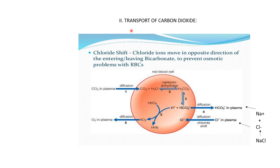Moving on to the second part of internal respiration — transport of carbon dioxide. Carbon dioxide in the plasma diffuses into the RBC, combines with water, and forms carbonic acid in the presence of carbonic anhydrase, which is present only in RBCs. This carbonic acid is unstable and dissociates into H⁺ ions and bicarbonate. The bicarbonate diffuses into the plasma. Since something negative is going outside the RBC, Cl⁻ ions move inside to maintain balance — this is called the chloride shift. The H⁺ ions combine with hemoglobin, making the blood more acidic.